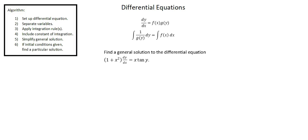Following the general form that we see at the top of the screen, we want to manipulate our differential equation so that we have dy over dx on one side and the product of the x function and the y function on the right side. From there we will separate the variables into two terms of integration — the integral of the y function with respect to y on the left, and the integral of the x function with respect to x on the right — then integrate both sides and simplify.